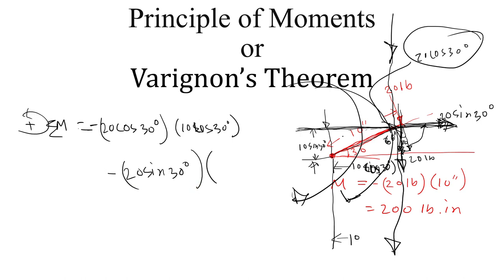The distance of that force - so this is the line of action of that horizontal force and the distance is this, which is 10 sine 30 degrees. So now if you do all this calculation correctly, I found exactly 200 pound inches of moment.